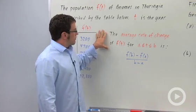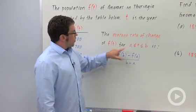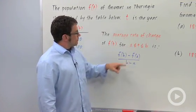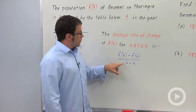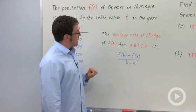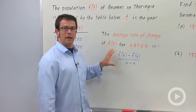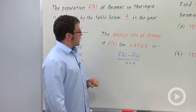This is how we define average rate of change of f of t over an interval: it's f of b minus f of a, over b minus a. It looks a lot like average velocity — it's really the same kind of thing. It's an average rate of change.